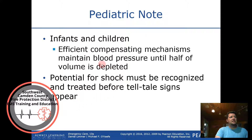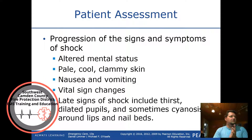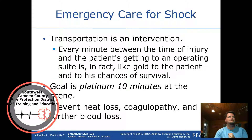On a pediatric note: infants and children have efficient compensating mechanisms that maintain blood pressure until half of blood volume is depleted. The potential for shock must be recognized and treated before telltale signs appear. Children and infants compensate for shock much better than adults, so their signs and symptoms won't be seen until much later. The progression of signs and symptoms of shock includes altered mental status, pale, cool, clammy skin, nausea, vomiting, and vital sign changes. Late signs include thirst, dilated pupils, and sometimes cyanosis around the lips and nail beds.